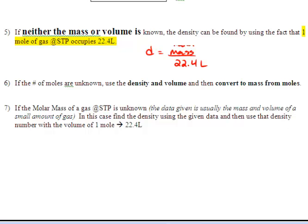Now if the number of moles are unknown, use the density and volume and then convert to mass from moles. And finally, this last rule is if the molar mass of a gas at STP is unknown, the data given is usually the mass and volume of a small amount of gas. In this case, find the density using the given data and then use the density number with that volume of one mole equals 22.4 liters.